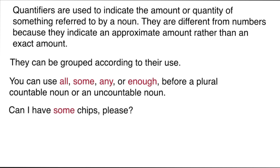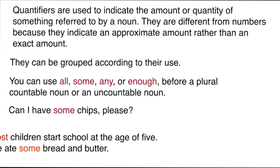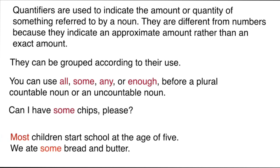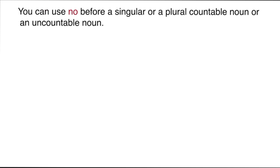There are rules for using determiners and quantifiers. Some can be used only with countable nouns, some only with uncountable nouns, and others with either. We can use 'all', 'some', 'any' before plural countable nouns or uncountable nouns — for example, 'Can I have some chips please?', 'Most of the children start school at age five', or 'We ate some bread and butter'. We can also use 'no' before singular or plural countable or uncountable nouns — for example, 'There were no pictures on the wall.'